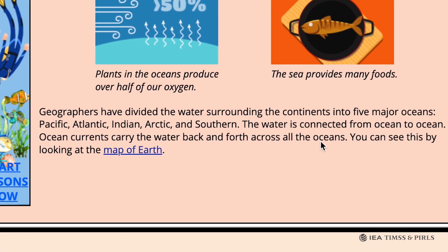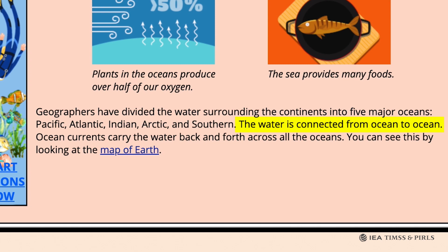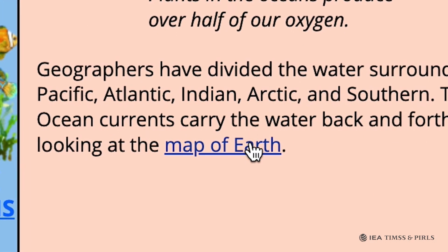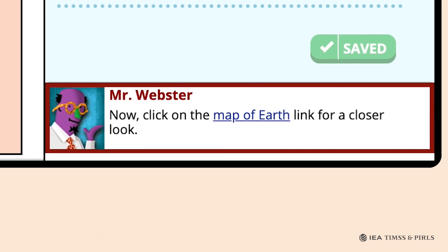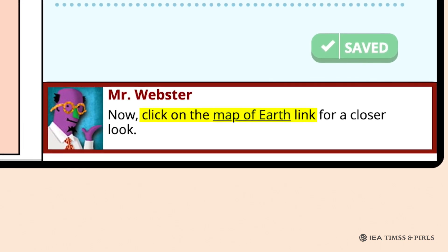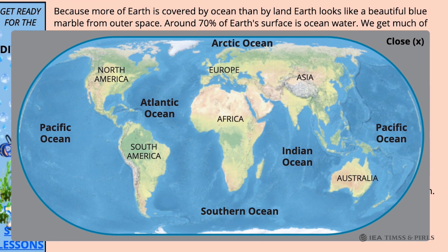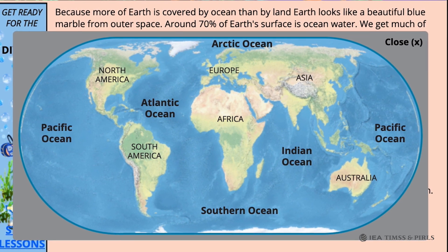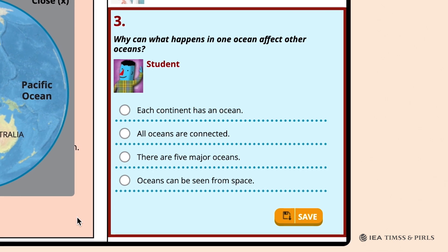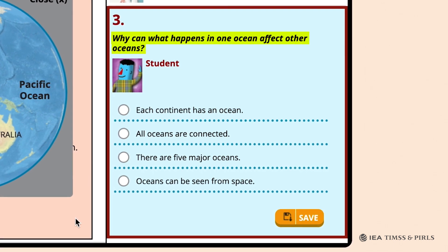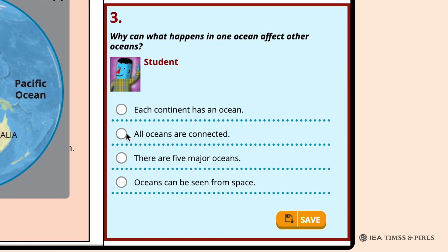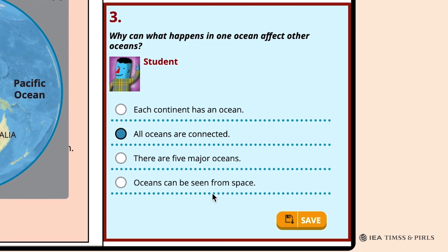The text at the bottom of the webpage explains that the oceans are connected and provides a link to a map of Earth showing this. Mr. Webster asks students to click on the link to take a closer look. The map shows Earth's continents and how they're surrounded by the five oceans. In question three, Mr. Webster asks why what happens in one ocean can affect other oceans, and students should select 'All oceans are connected.'